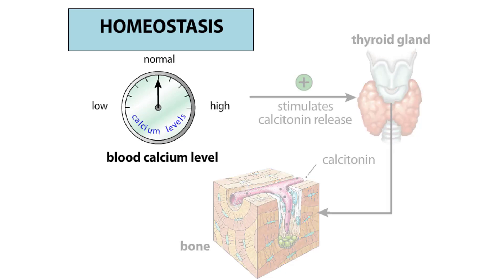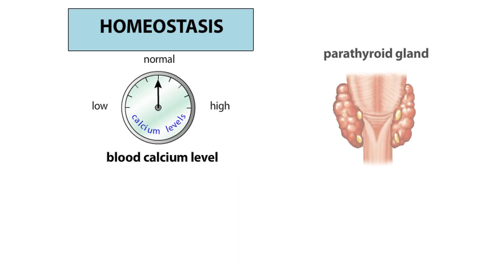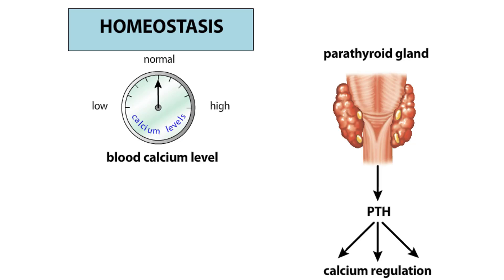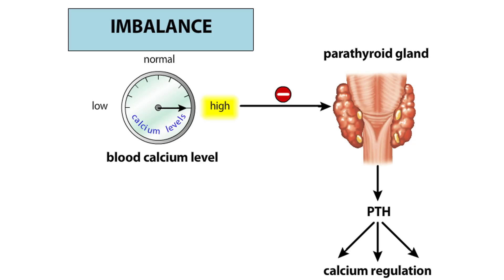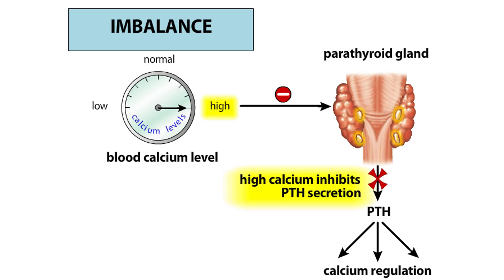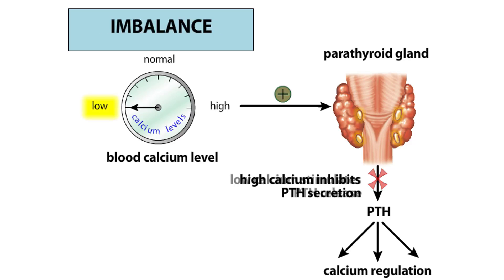In contrast to calcitonin, the parathyroid hormone exerts a broad influence on blood calcium levels. Calcium levels are sensed by receptors in the plasma membranes of the parathyroid cells. When these receptors are activated, they inhibit the synthesis and release of PTH. A fall in blood calcium levels removes this inhibition and triggers the synthesis and release of PTH.